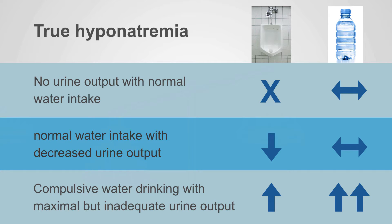Here's a summary of what we just described. No urine output with normal water intake is renal failure. Normal water intake with decreased urine output is the last scenario. And compulsive water drinking with maximal but still inadequate urine output is the second scenario.